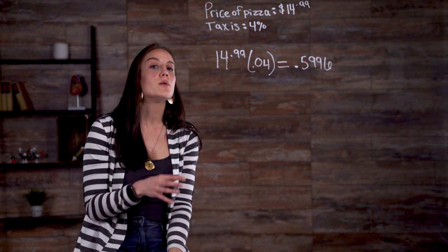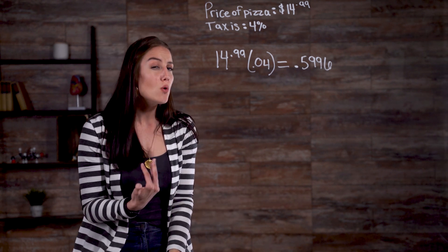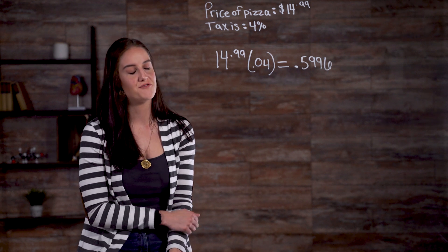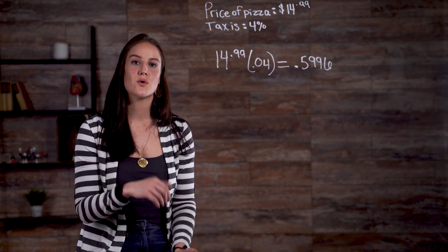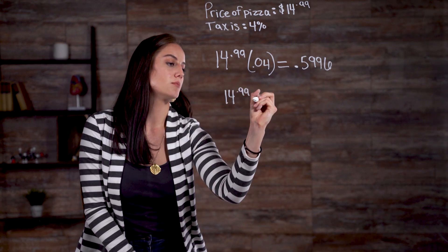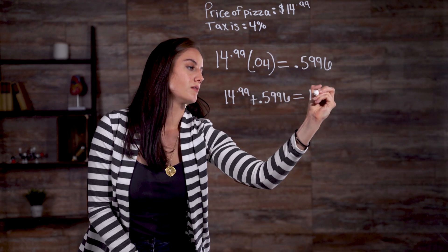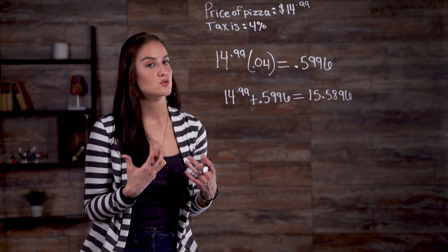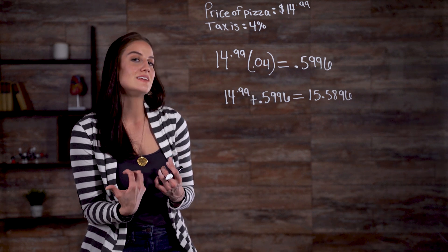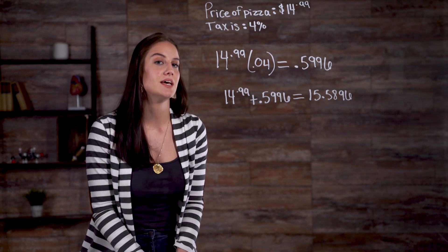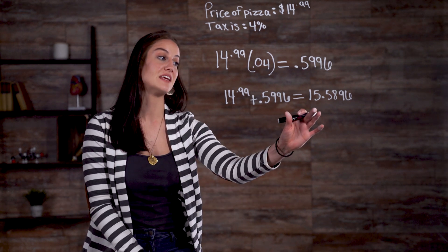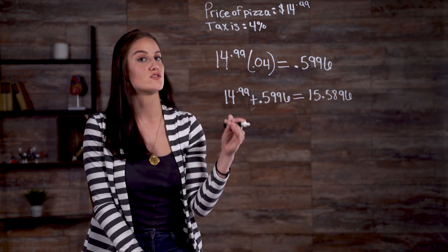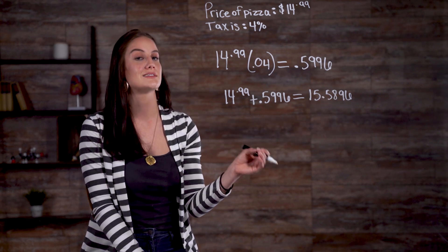To keep our number most accurate, we won't round to the nearest cent until we have reached our final number. Now that we know the sum of the original total and our tax, we need to factor in a 30% tip. We need to multiply 15.5896 times 30%, or 0.30.